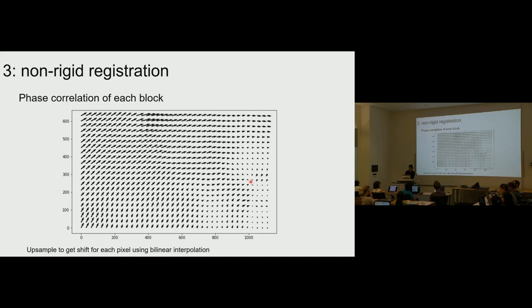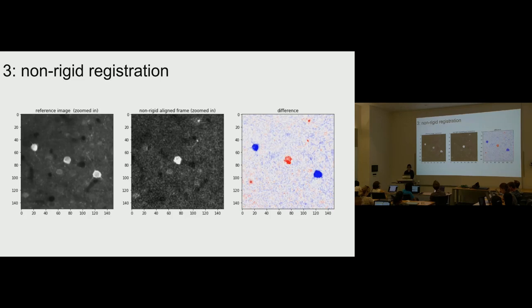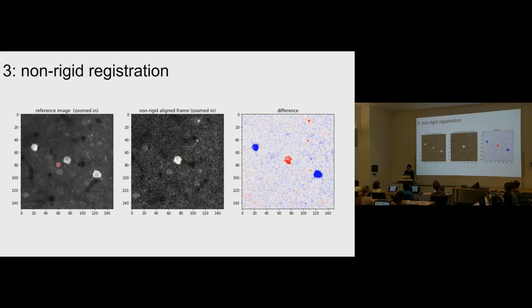After non-rigid registration, this is what the image looks like. We're not seeing any shifts on the cell, which is good — we were hoping the cell wouldn't move after non-rigid registration. It's much easier to see these shifts in the GUI, so we'll look at that later. Next we'll talk about benchmarking.